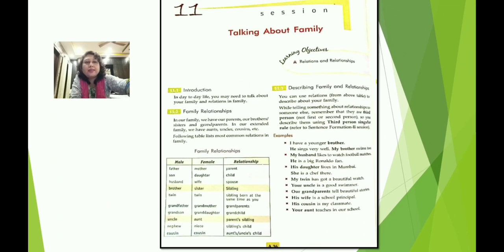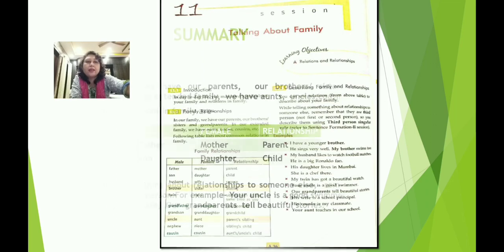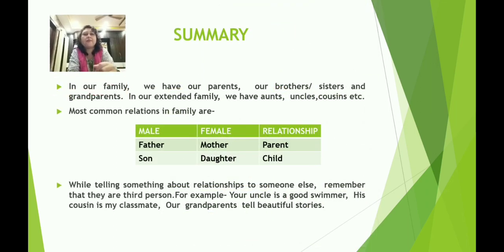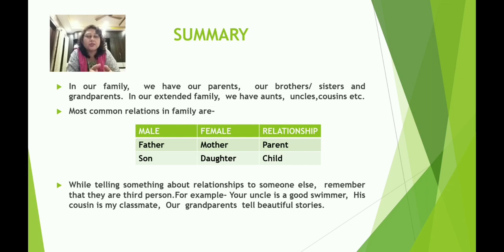In the summary of session 11: in our family we have parents, brothers, sisters, and grandparents. In extended family we have aunts, uncles, and cousins. The most common relations are father/mother (parents), son/daughter (child). While referring to family relationships to someone else, we use the third person singular rule — for example: 'Your uncle is a good swimmer,' 'His cousin is my classmate,' 'Our grandparents tell beautiful stories.'